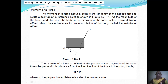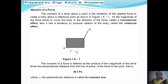When you apply a force and the body moves in the direction of the force, that is a translational effect. For example, pushing a block to the right causes translation. But when the force P is applied to the plate and the plate rotates about point A, that is moment. The moment is defined as the force P multiplied by the perpendicular distance — specifically the perpendicular distance between the line of action of the force and the point about which the body rotates. This perpendicular distance is called the moment arm. If the line of action passes through the point, there is no moment produced there because the moment arm is zero.